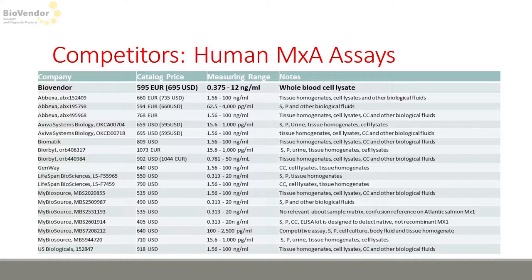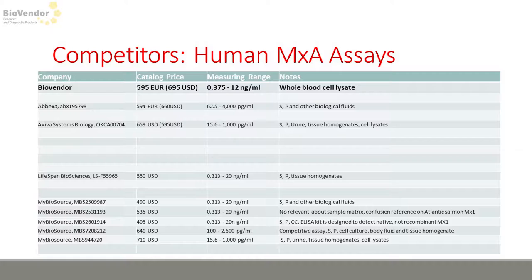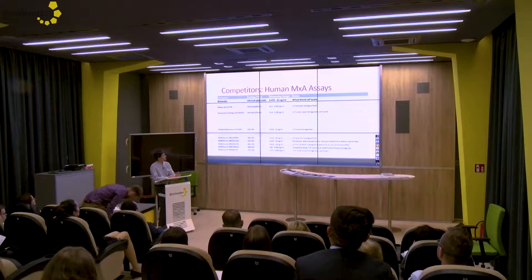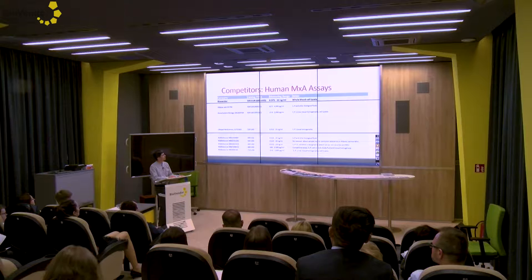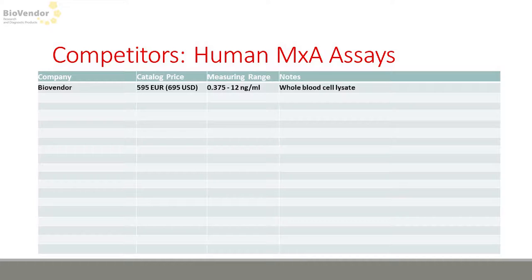If you remove competitors with very high price per kit, the list is reduced. If you also remove assays with an improper measuring range quite different from ours, the list is reduced further. And if you finally remove those with improper application in serum or plasma — because MXA is an intracellular protein and you need to lyse blood cells and prepare whole blood cell lysates — we consider measurement in serum and plasma as not a proper application. After removing those companies, there is only one that is relevant for this application.